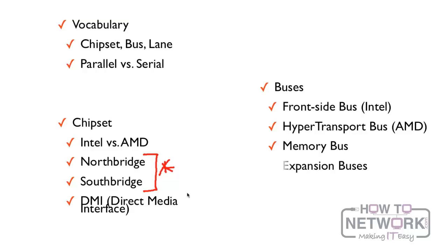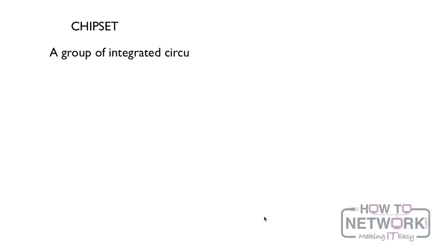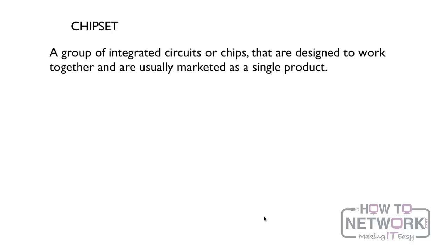And finally the expansion bus, which we'll discuss in more depth in later videos. So first let's discuss the word 'chipset.' What a chipset is is a group of integrated circuits or chips that are designed to work together and are usually marketed as a single product.